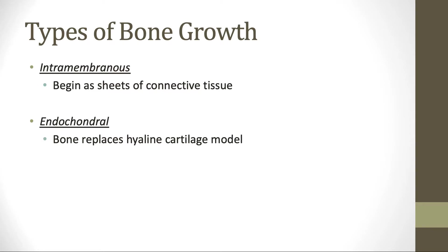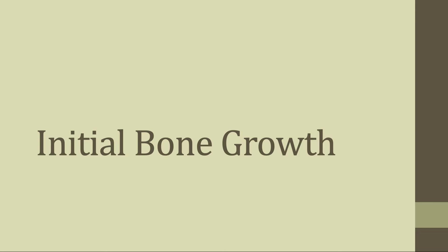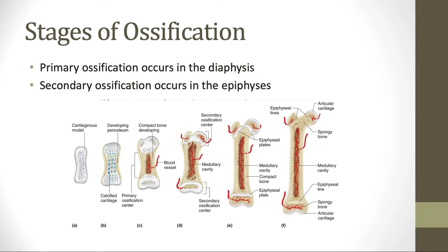We are going to focus on endochondral bone growth for the rest of this screencast. In talking about bone growth, we'll first discuss how the bone itself is initially formed. There are two stages of ossification overall. Primary ossification occurs in the diaphysis, and secondary ossification occurs in the epiphyses. Looking at this progression, we can see we start as a cartilage model, and then bone growth begins in the center of the diaphysis and works its way out towards the ends of the diaphysis, then repeats in the epiphyses.